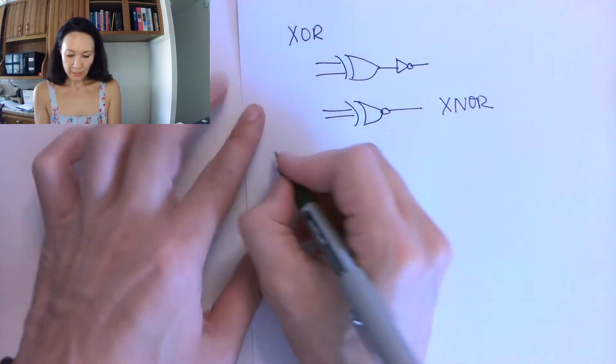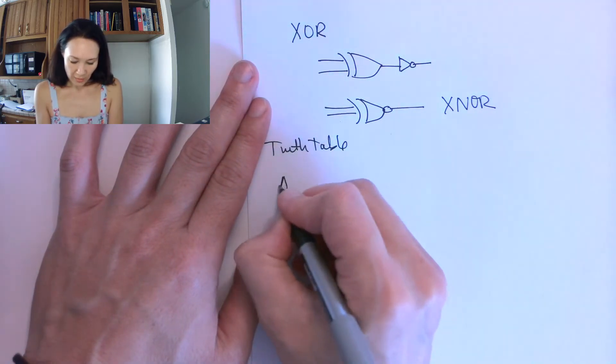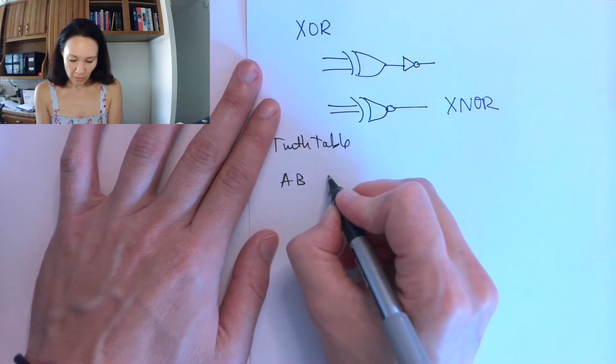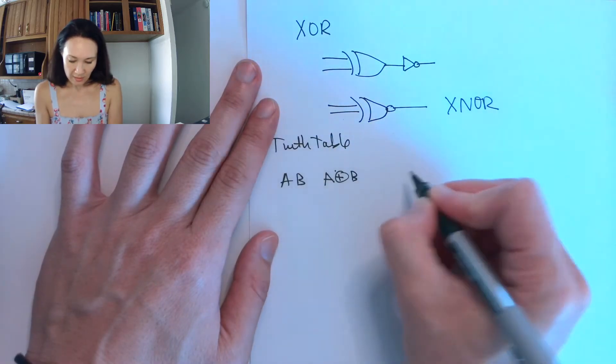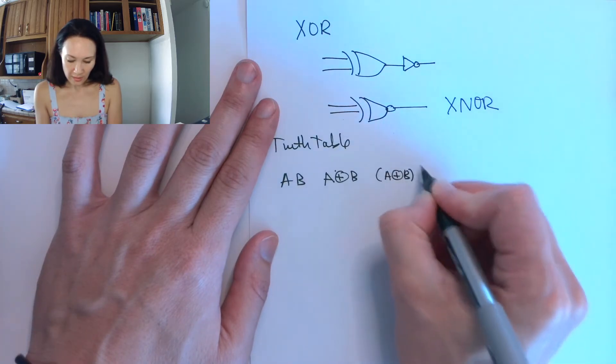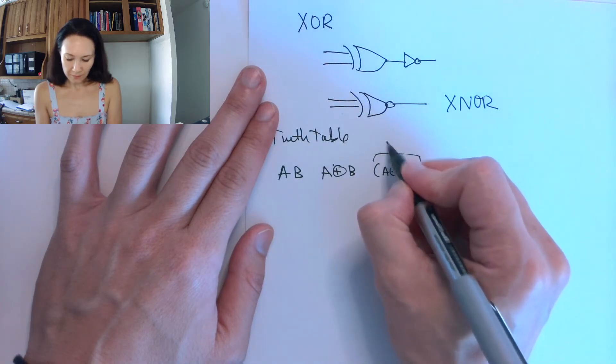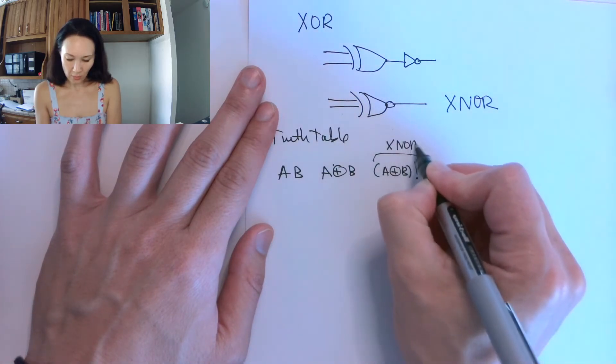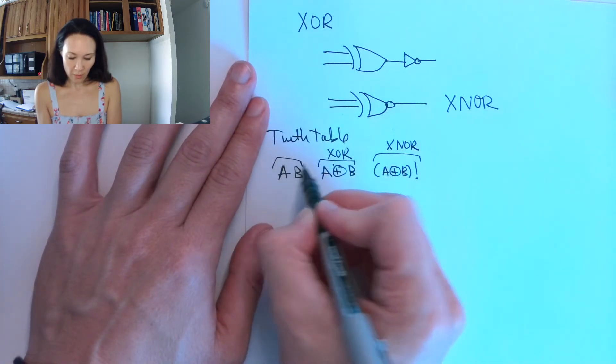And the truth table, if we had A and B, I'm going to put a column for A XOR B not. And this right here is going to be the XNOR, if this is the XOR for our inputs.